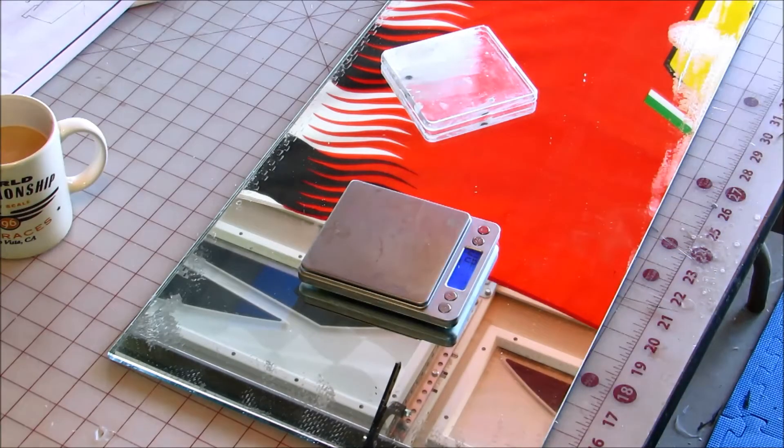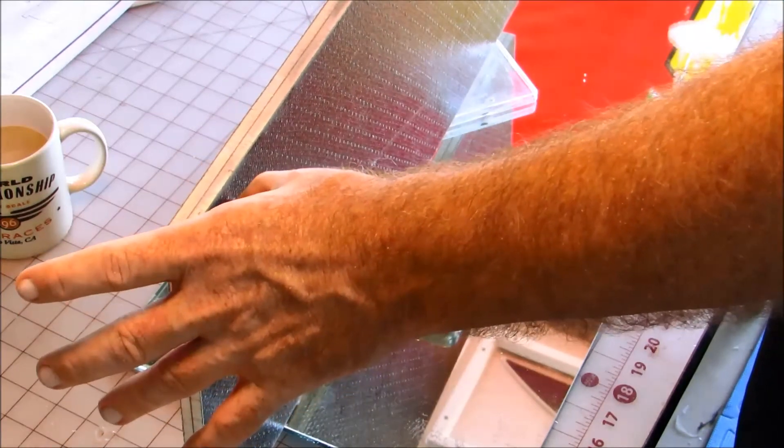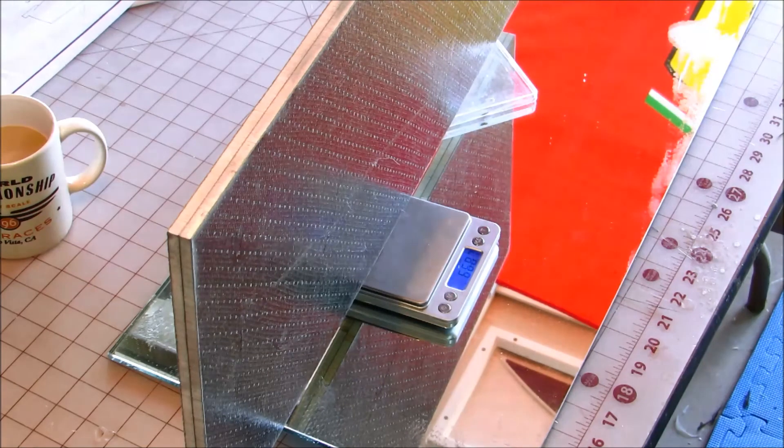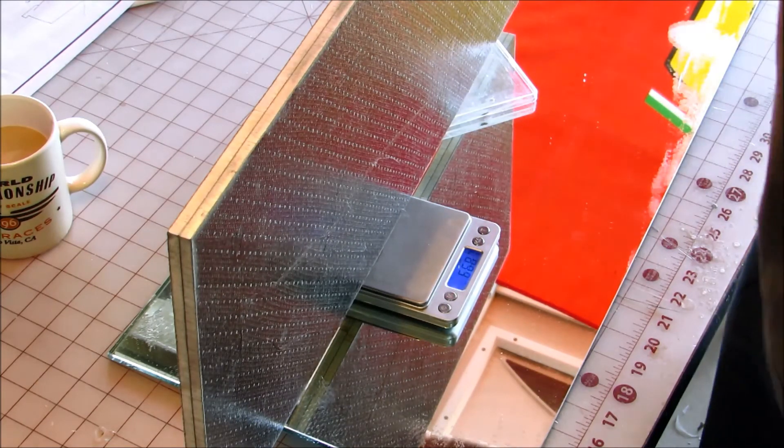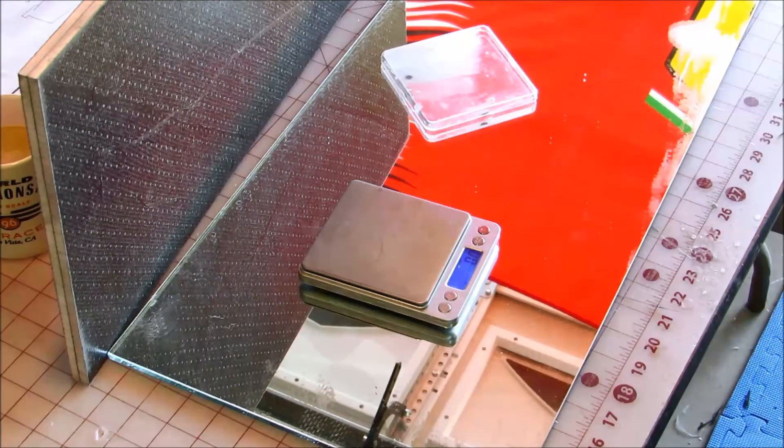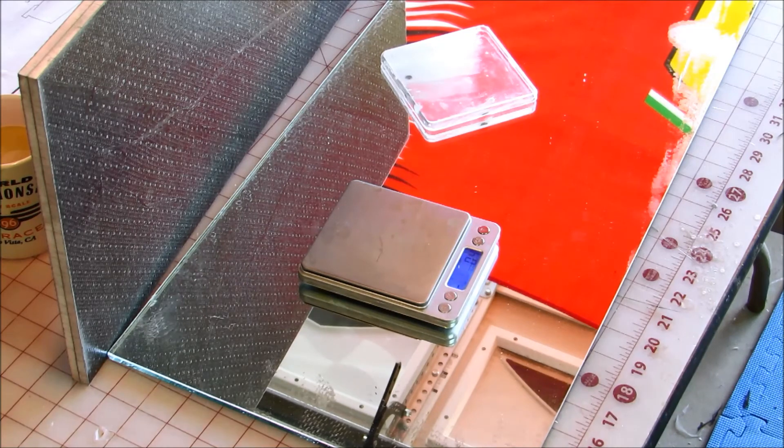There we go. Grams. 668 grams. I don't know what that works out to. Divide by 28 and you'll know how many ounces that is, but it's a heck of a lot less ounces than aircraft ply. Later.